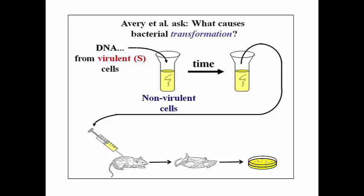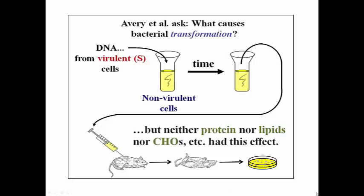The convincing thing, of course, was that when they purified either protein, or lipids, or RNA, or carbohydrates separately from the heat-killed S cell mixture, and tried to do the same experiment, adding those in turn to non-virulent R cells, they had no effect. The mouse then would survive a subsequent injection. So, Avery and company concluded that the DNA from the S cells was the transforming principle.